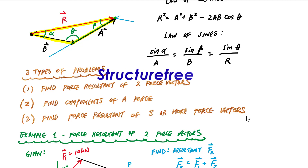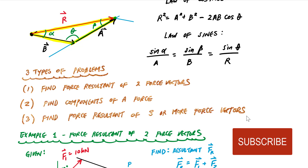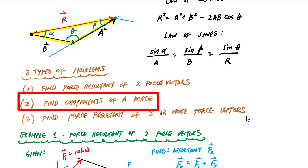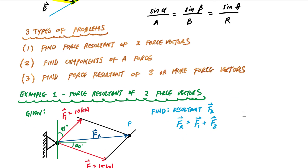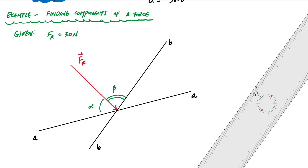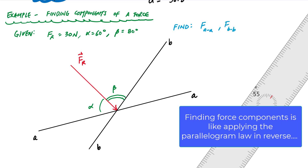Welcome back to Structure Free Statics. In this video we're going to continue our use of the parallelogram law, and this time we do a couple of examples where we find the components for a given force. Here we're given a resultant force and we want to find the components of this force acting on two other lines. This is kind of like the parallelogram law in reverse.